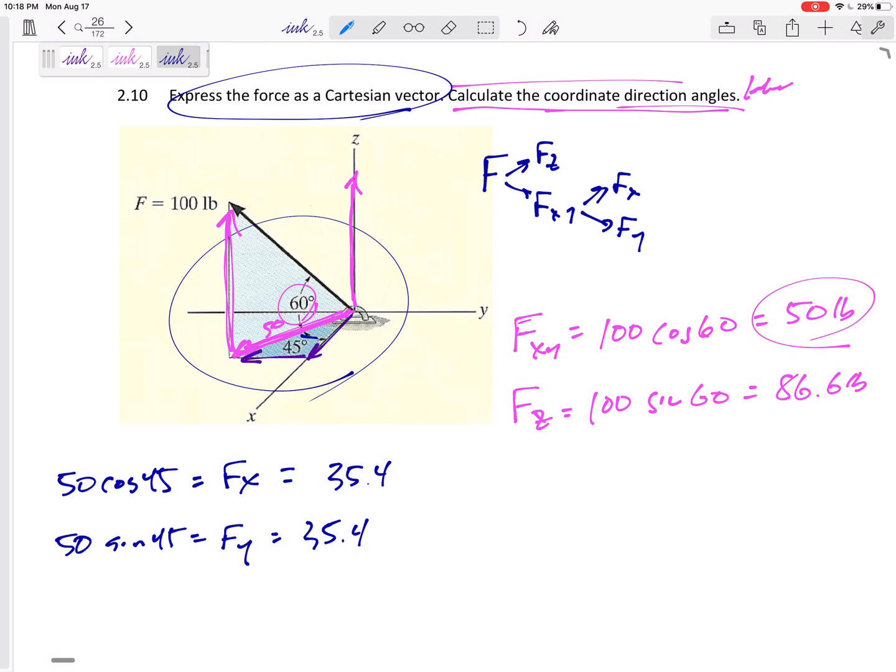But unlike coordinate direction angles, I've got to give it a negative myself if it is in the negative direction. So you see that X, that's the positive X direction, but do you see this Y? That Y is in the negative, so it's negative. For spherical angles, you've got to give the negatives yourself.